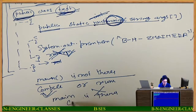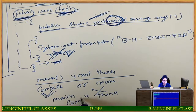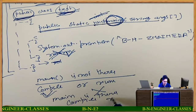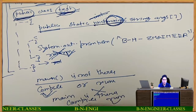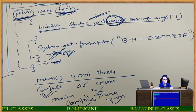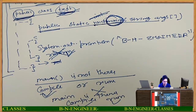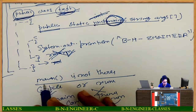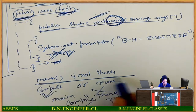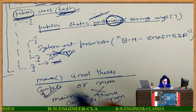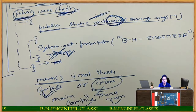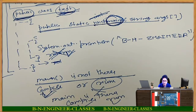If main is there, then you can compile and run both. If main is not there, then you can only compile — you cannot run the program.